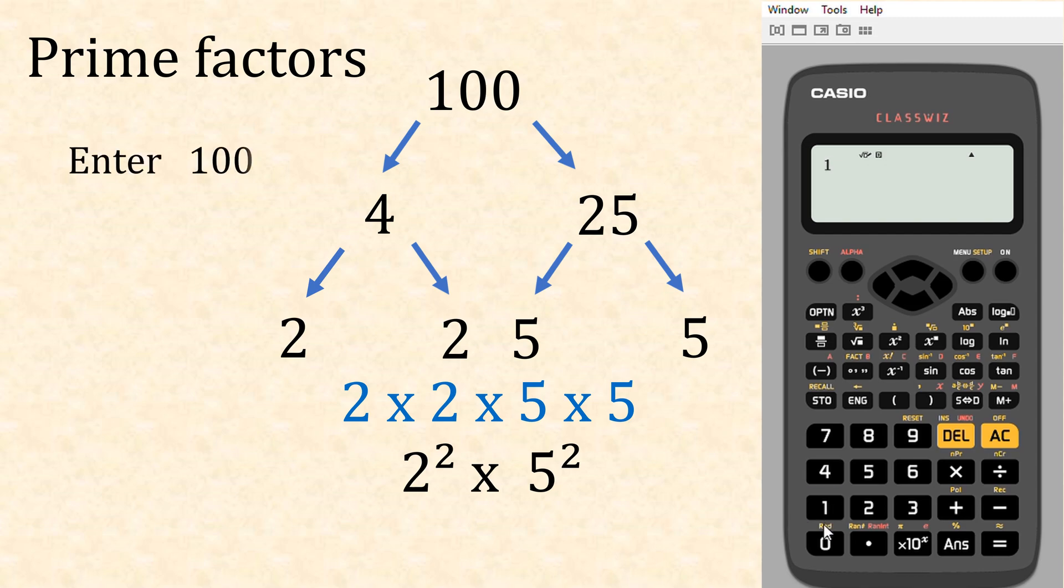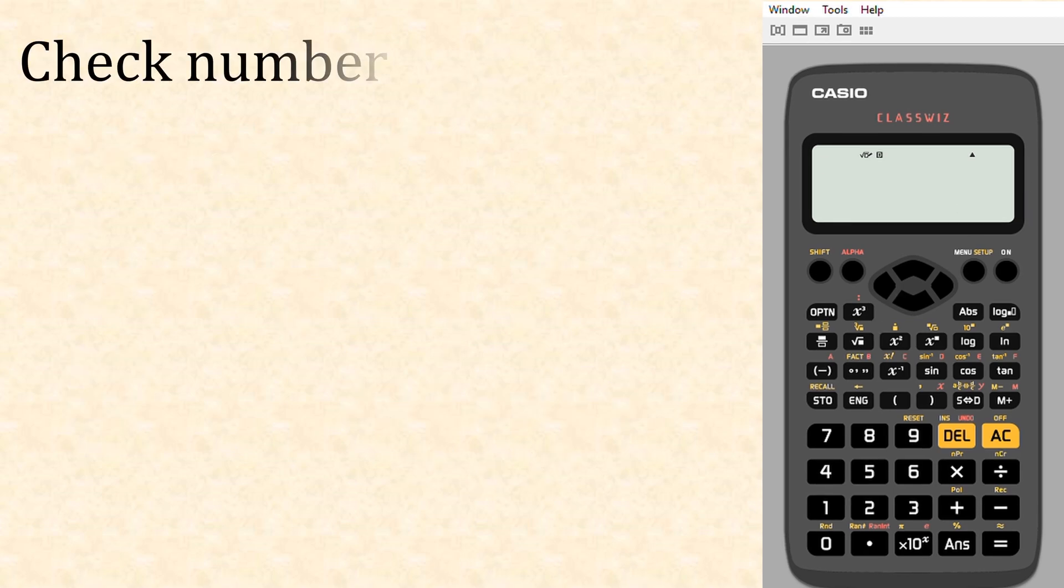We're going to enter 100, press equals, and then back up to our shift button. Then we're going to press our fact button, which is just here, and that takes us straight to two to the power of two times five to the power of two.